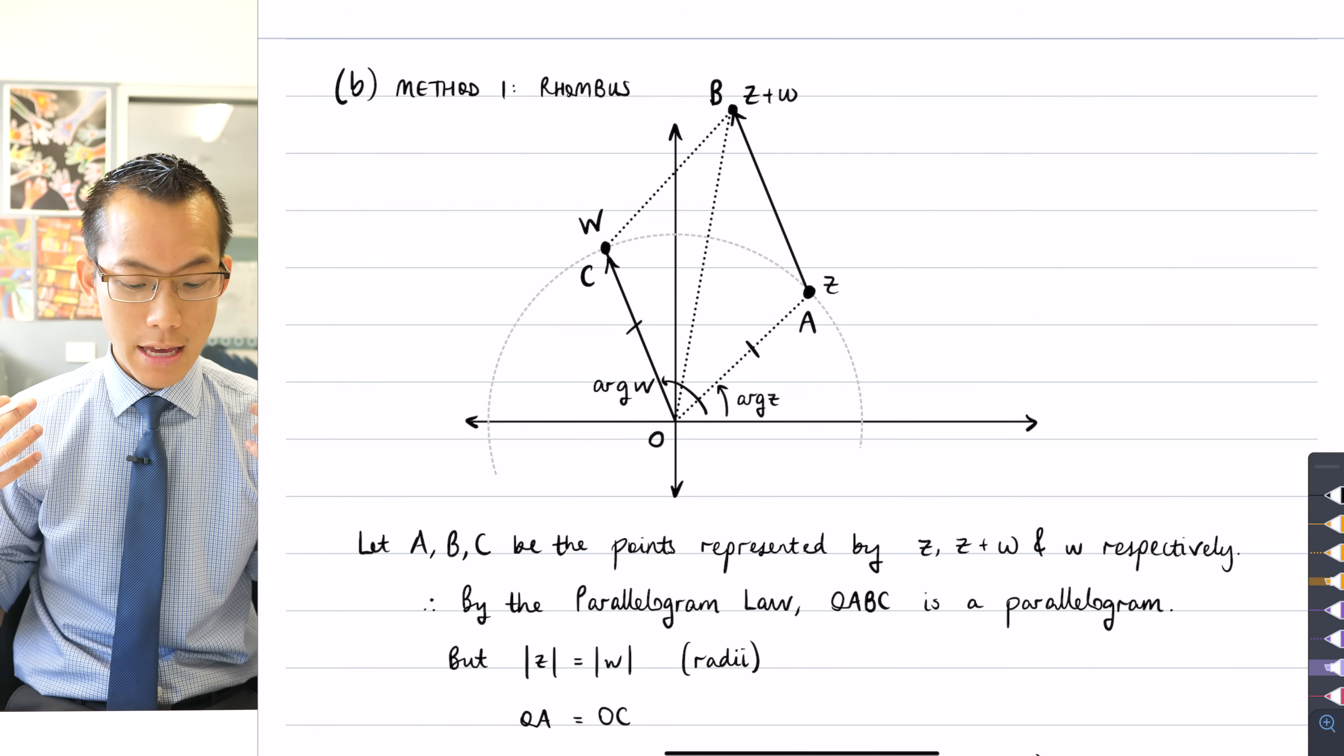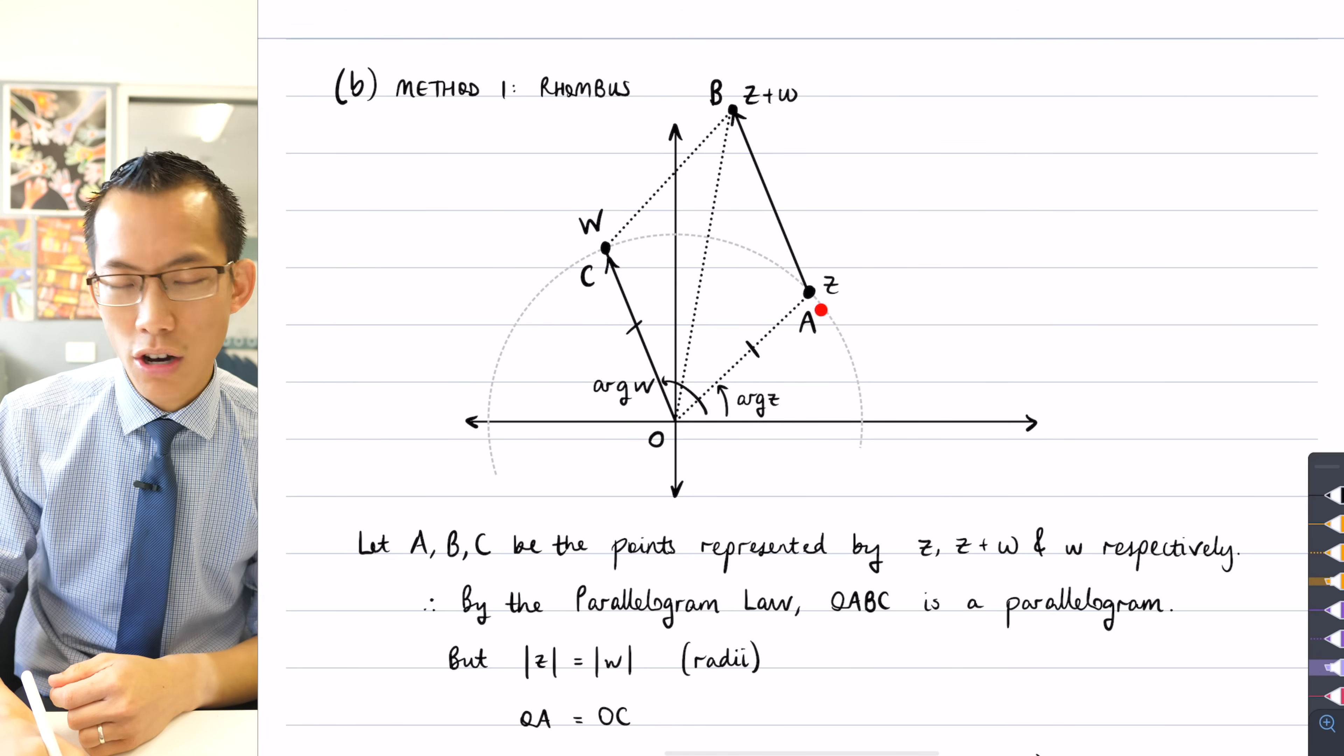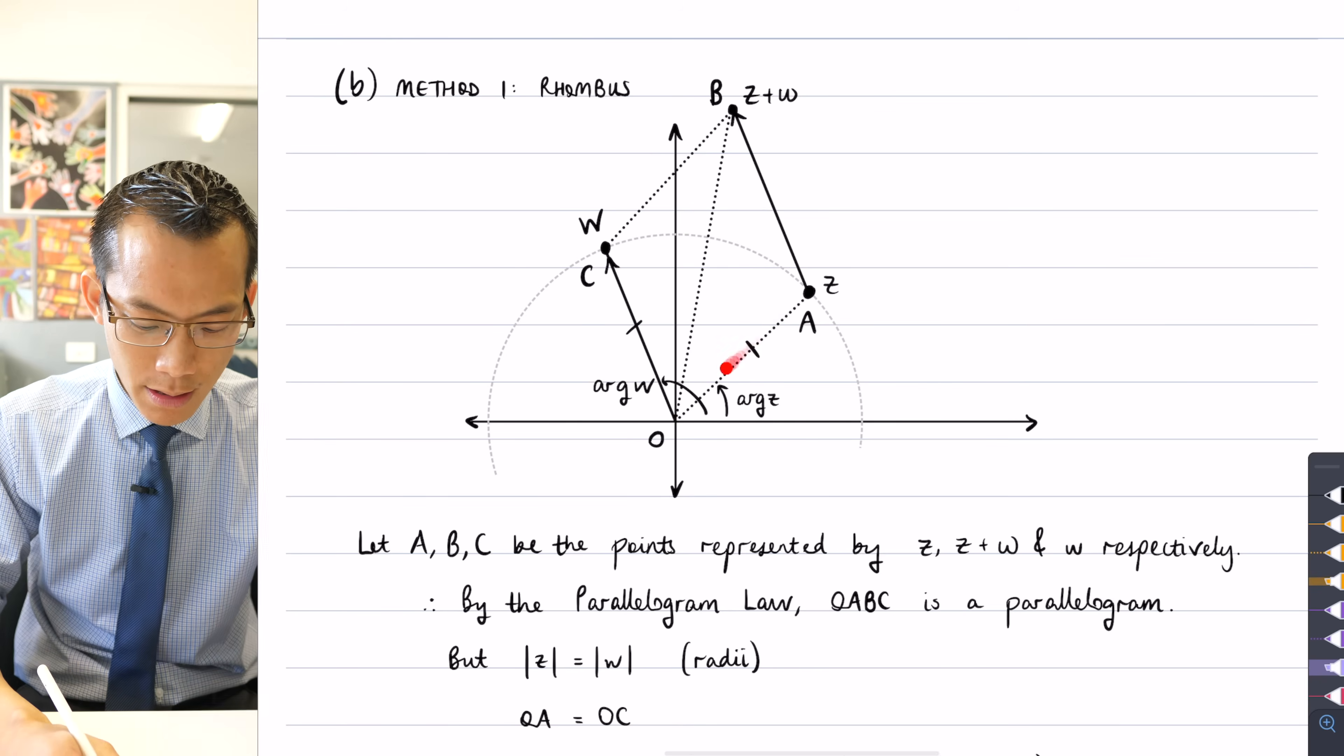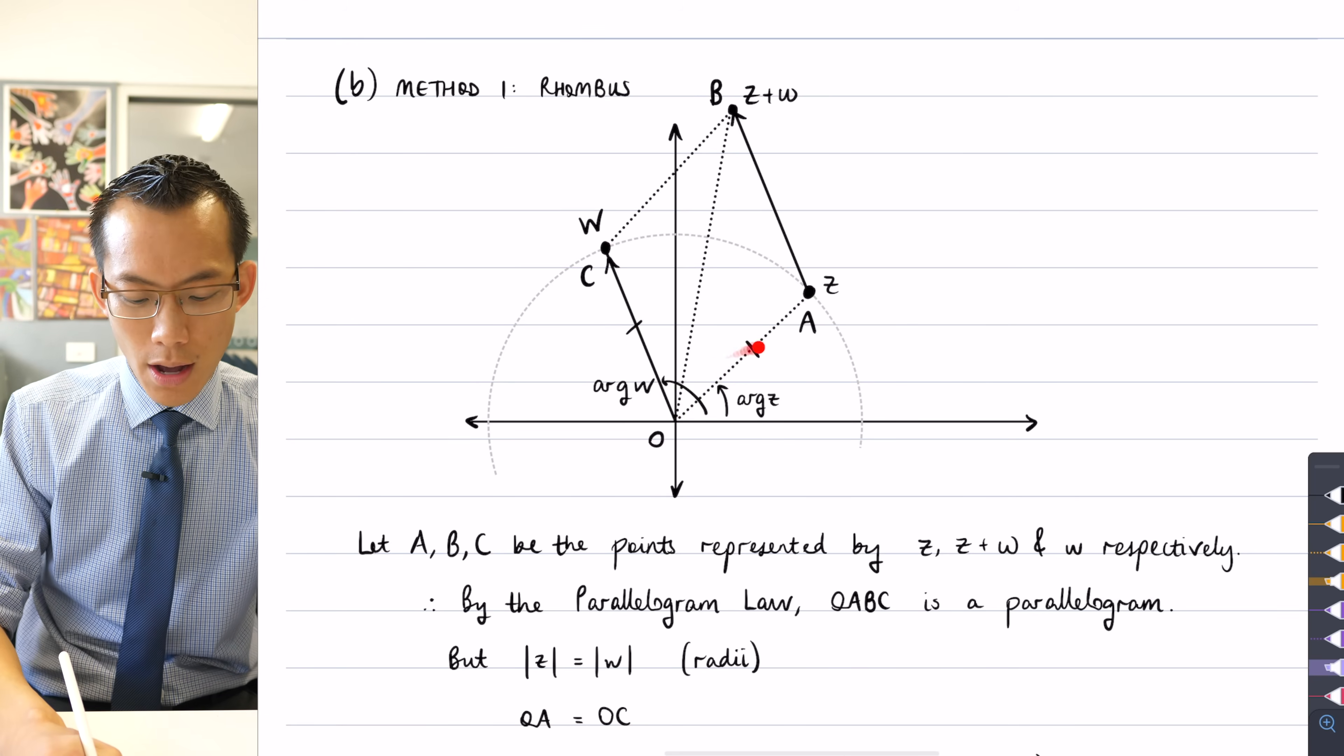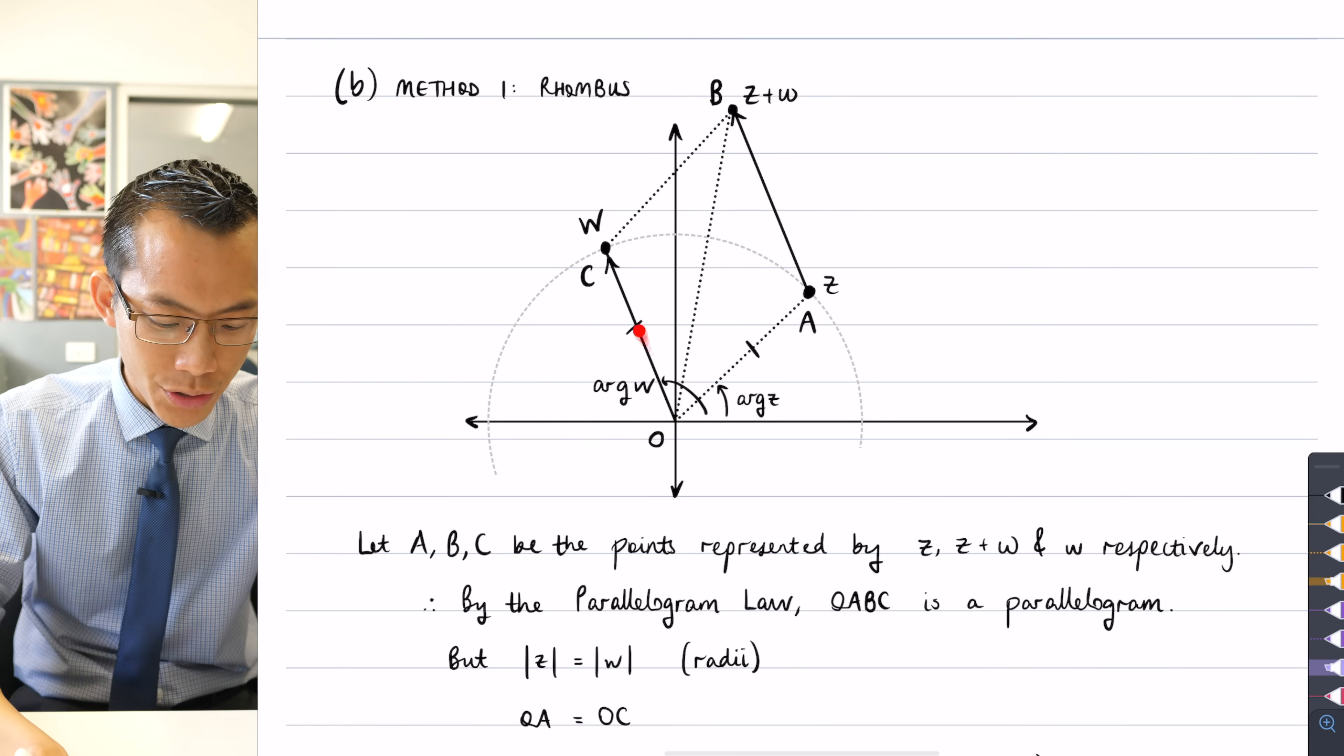And of course, the more accurate you can make your diagram, which, by the way, it's easier to make an accurate diagram when it's a big diagram, the more accurate you can make it, the more you can see the intrinsic geometry that's going on here. You're creating a rhombus, not just a parallelogram, because z, this is the interval that represents that complex number z, and w, here's the corresponding interval, because they both are radii on the circumference of that circle, centered at the origin, that's why you get, and I've labeled these OA and OC.